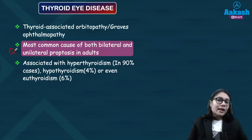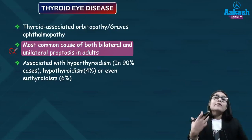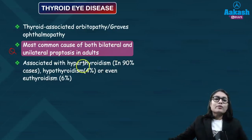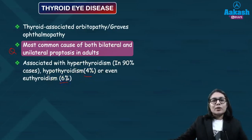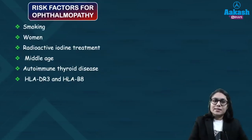When looking at the thyroid status of patients presenting with thyroid eye disease, in 90% of patients there is presence of hyperthyroidism. However, a few patients with hypothyroidism and euthyroidism can also have thyroid eye disease — around 4% of hypothyroid patients and 6% of euthyroid patients, meaning those with normal thyroid levels, can also have symptoms of thyroid eye disease.